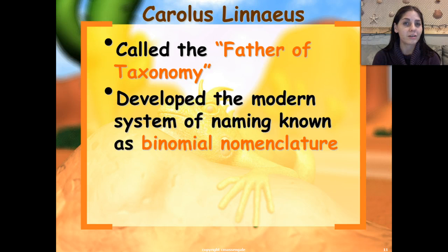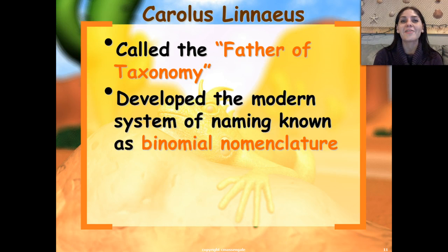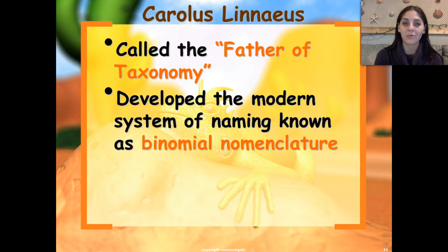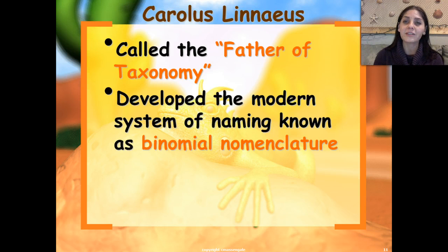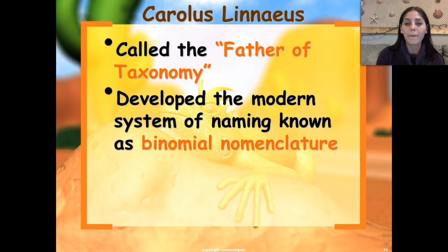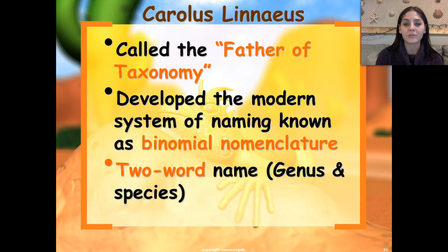In this year we've also learned about two other fathers: the father of genetics, who is Mendel — the monk who studied his peas — and the father of evolution, who was Darwin. So just like they are fathers of their individual studies, Carolus Linnaeus is the father of taxonomy. He developed the system of naming known as binomial nomenclature — bi meaning two, and nomial meaning names — and he developed this naming system to create the genus and the species names for each organism.